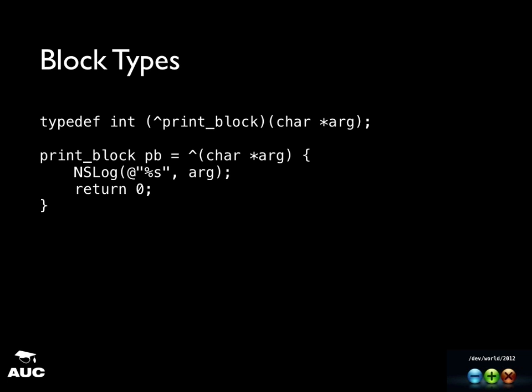This is how you would use one. You've got your block type, you create an instance, and then inline you can initialize it with a caret, then your parameter list. You can call the parameter whatever you want and use it just like any other function — you declare the function body within your braces. Notice you don't actually declare the return value in there; if it's wrong, the compiler will generate errors. The way to call it is the same as a C function — you just call the instance name and pass your parameter list.